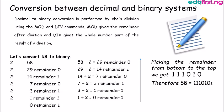Conversion between decimal and binary system. Decimal to binary conversion is performed by chain division using the MOD and DIV commands. Now the MOD is the command that represents modulus where you divide and get the remainder and the DIV command represents the divide where you use what you use to divide.